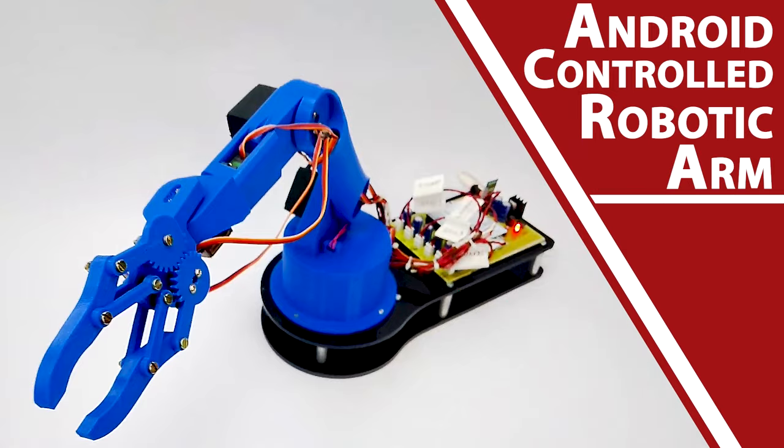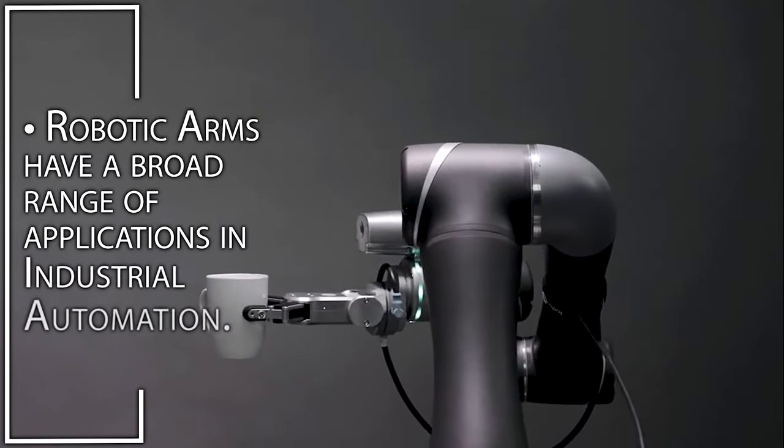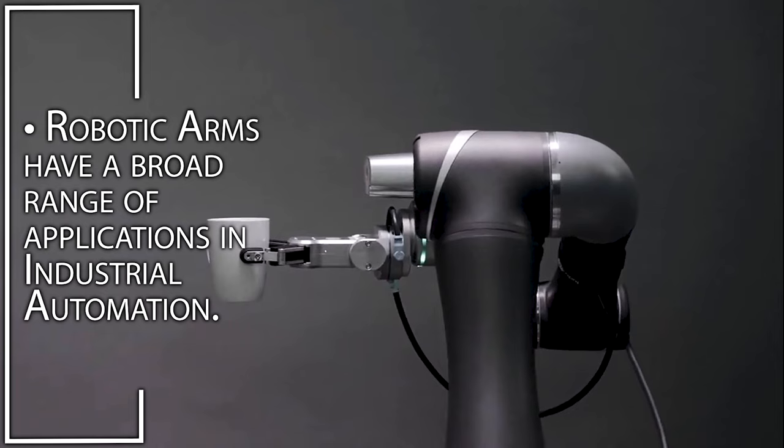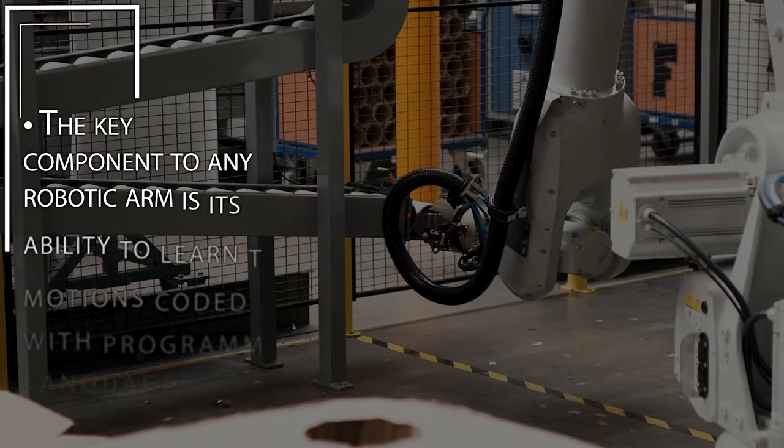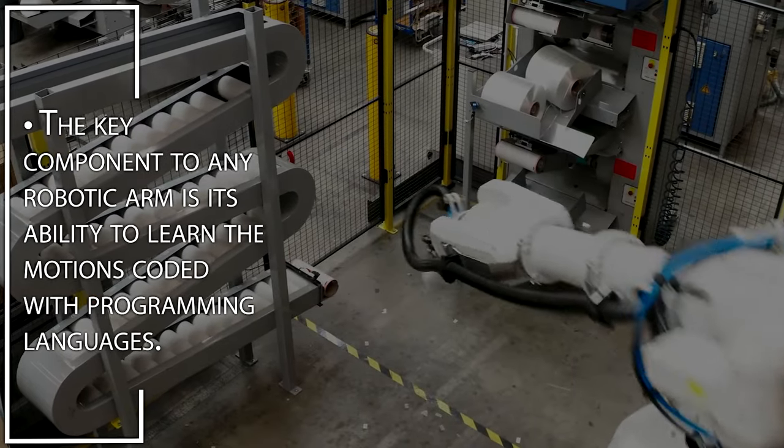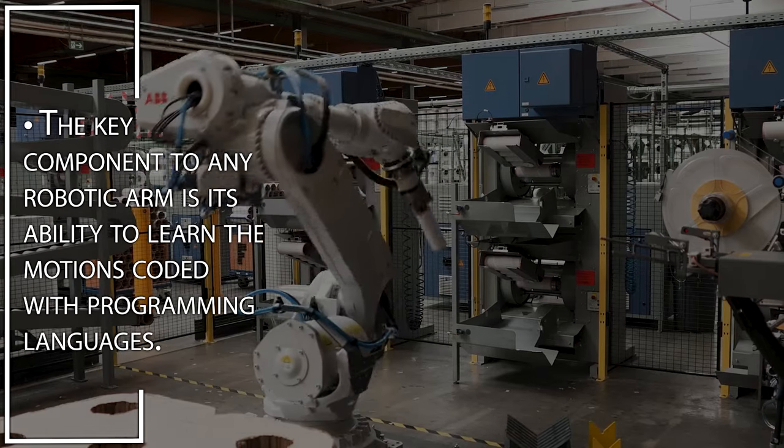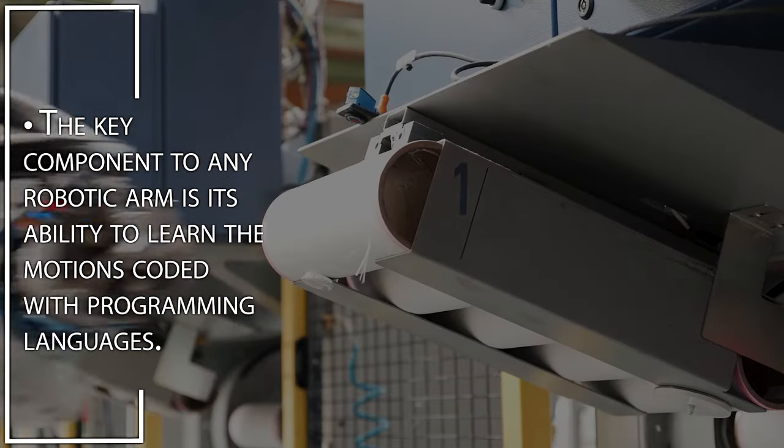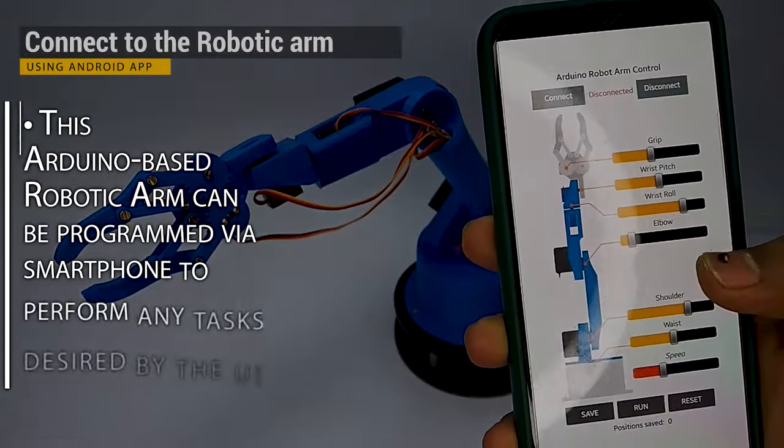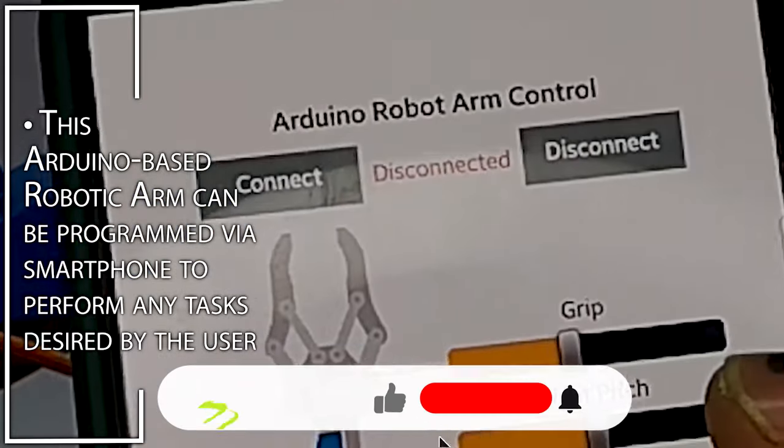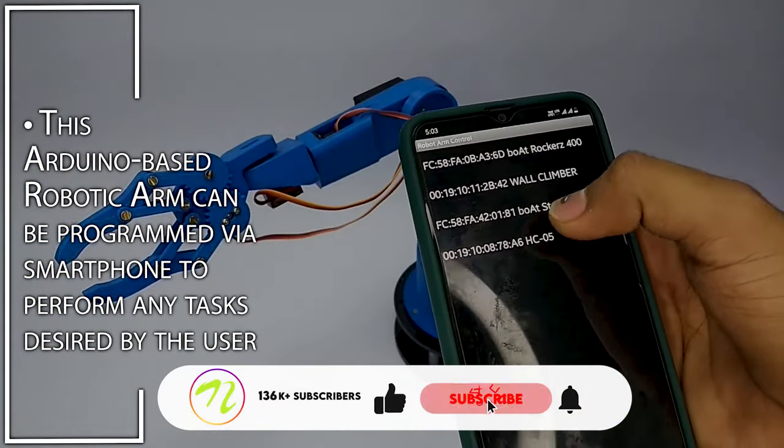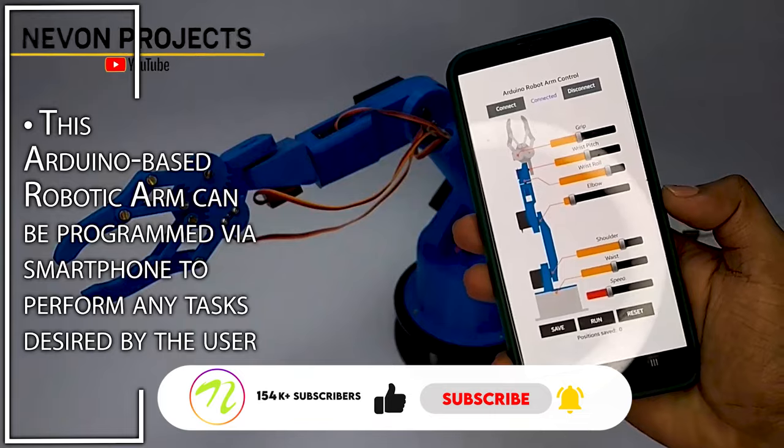Android Controlled Robotic Arm. Robotic arms have a broad range of applications in industrial automation. The key component to any robotic arm is its ability to learn the motions coded with programming languages. This Arduino-based robotic arm can be programmed via smartphone to perform any task desired by the user.